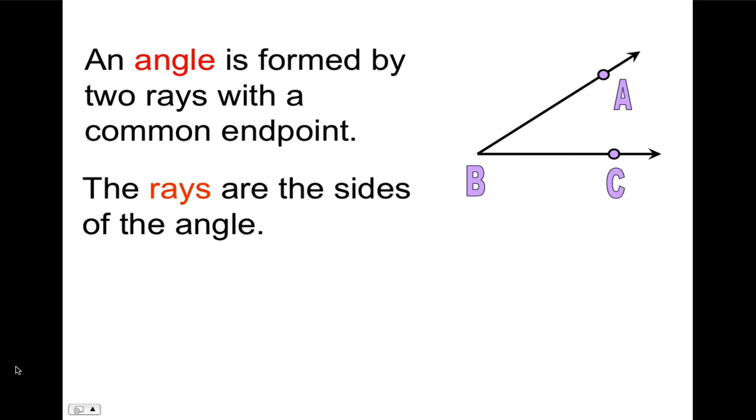Next, an angle is formed by two rays with a common endpoint. The rays are the sides. So the two rays that I see here are rays BA and BC. So their common endpoint is B. And the common endpoint is called the vertex. The vertex of this angle is B.